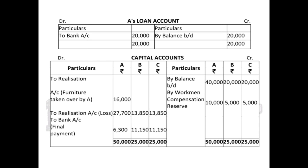After putting up all items, we calculate the balancing figure — the final payment to be made to partners. The final payment: A gets 6,300, B gets 11,150 and C gets 11,150. So we have closed the realization account, partner's loan account and partner's capital account.